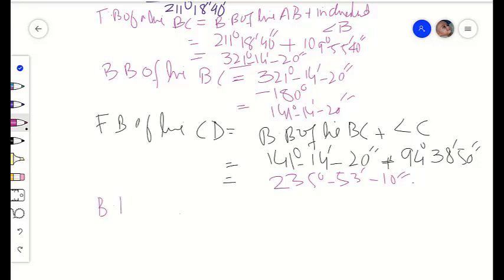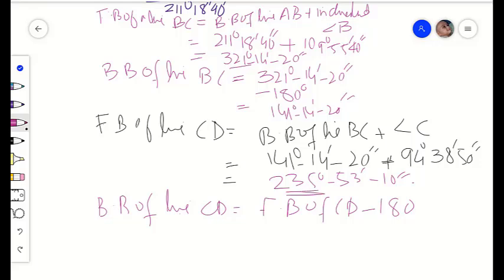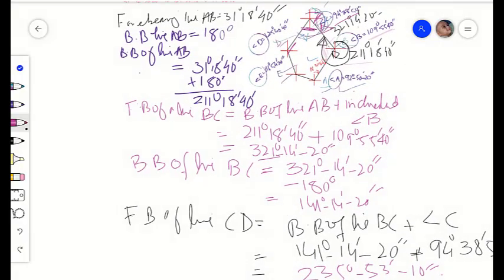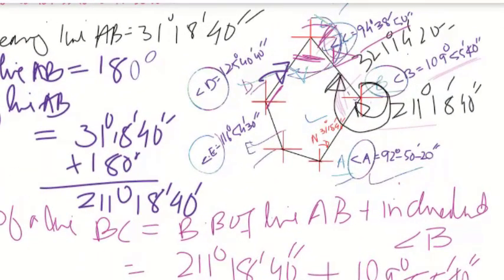The back bearing of line CD equals the forebearing of CD minus 180 degrees, because 235 is greater than 180. The forebearing of CD is 235 degrees 53 minutes and 10 seconds minus 180 degrees, giving a back bearing of line CD equal to 55 degrees 53 minutes and 10 seconds. As shown in the figure, we will add included angle D to find the forebearing of line DE.